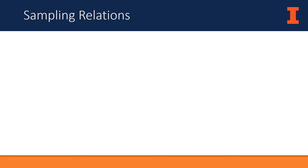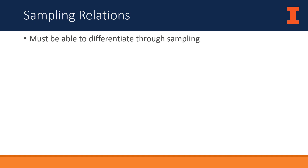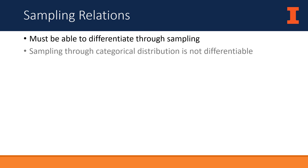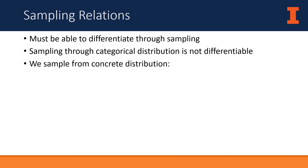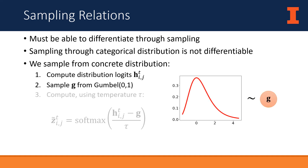Next, we must sample relation variables. To ensure end-to-end trainability, we want to differentiate through the sampling process. Since sampling from a categorical distribution is not differentiable, we instead sample from the concrete distribution, which is a continuous approximation to the discrete categorical distribution. Given distribution logits H, this proceeds by first sampling a vector G from the standard Gumbel distribution, then computing the following update, where tau is a temperature parameter. During training, the logits are taken from the encoder distribution; during inference, from the prior distribution.